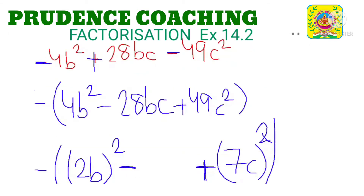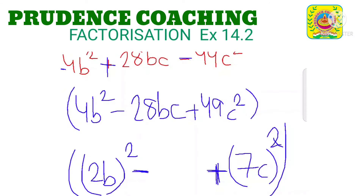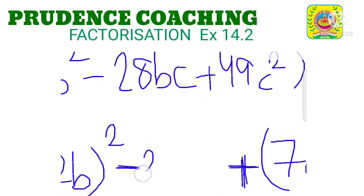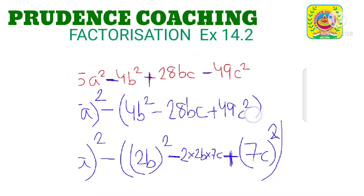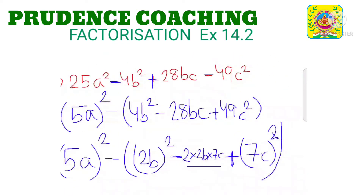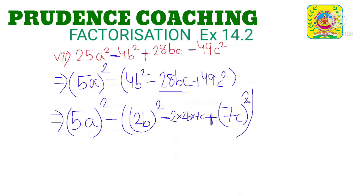Now if we look at this, this is a square minus something plus b square, so let us fill this gap with 2ab. Here 2 into a is 2b, into b is 7c, so if we just calculate it we are getting 28bc. So our assumption is correct.